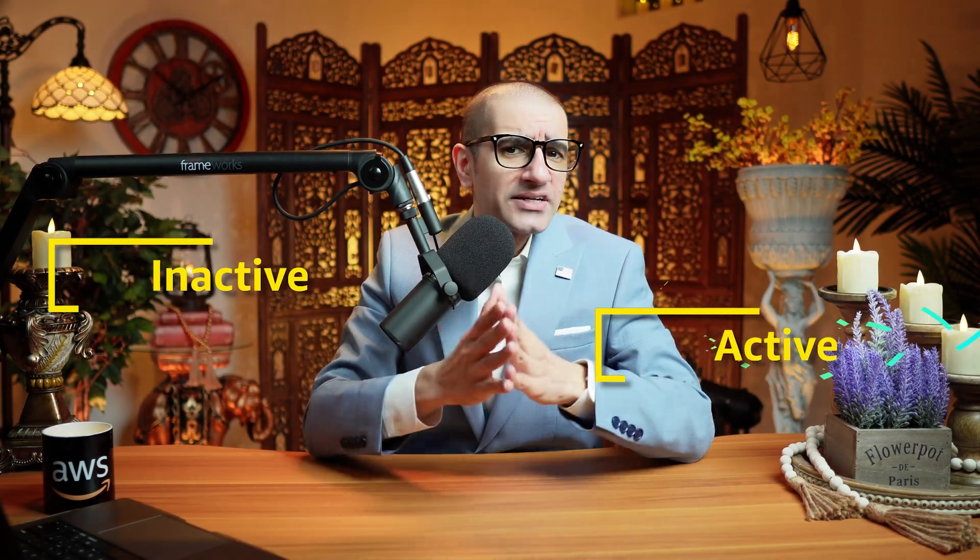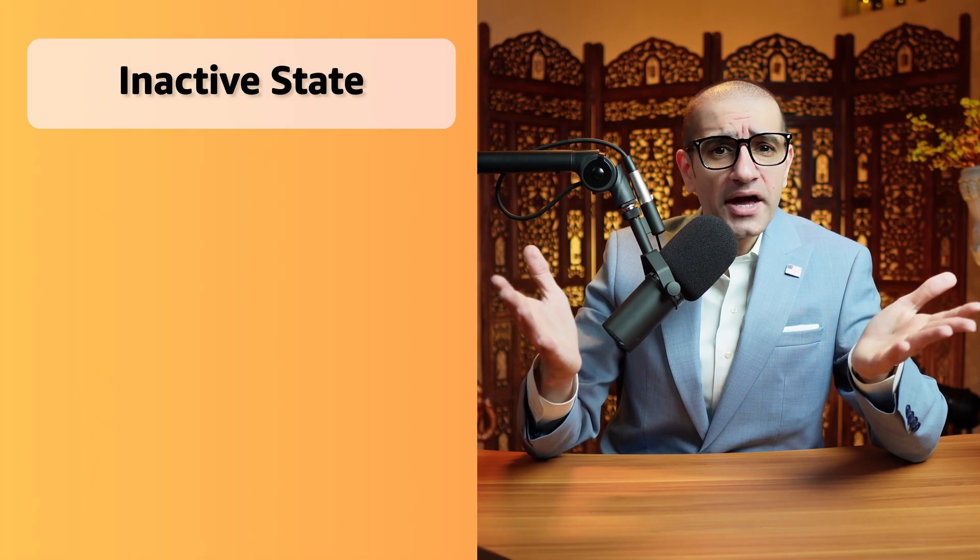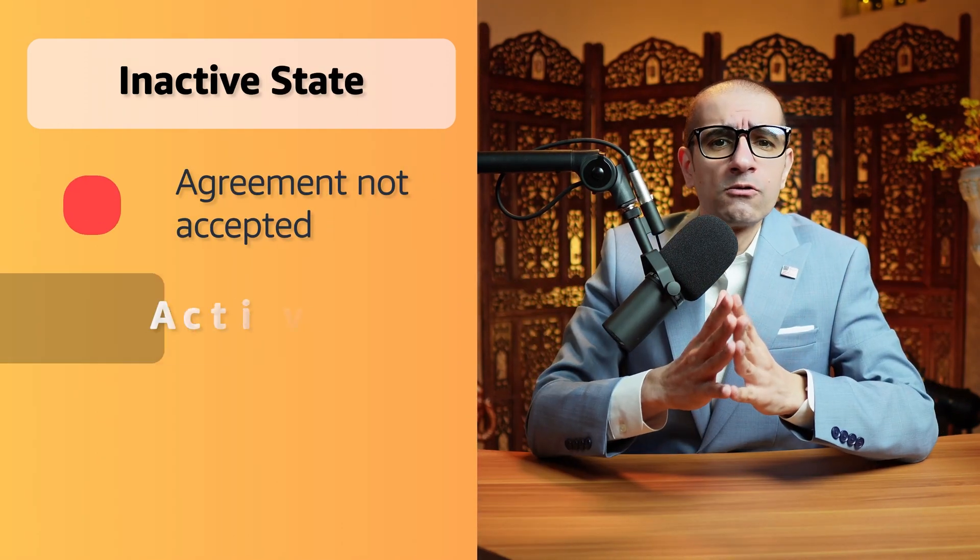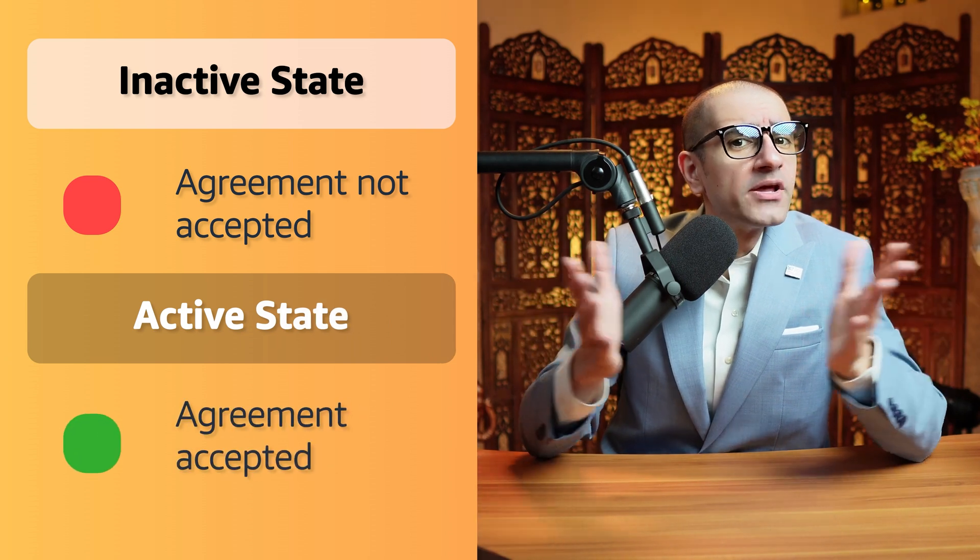Number 5. An agreement can have two states, inactive and active. An inactive state implies that the agreement has not been accepted by the user, whereas the active state implies that the agreement was accepted.